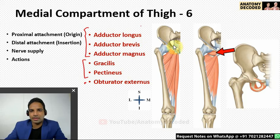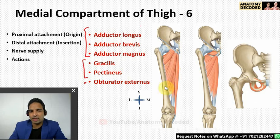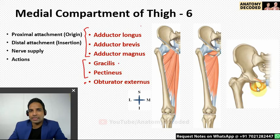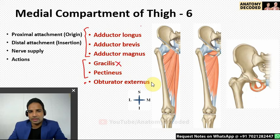The proximal attachment of the adductor muscles is on the pubis bone and the osteopubic rami. Adductor longus, brevis, and magnus attach on the anterior surface of the pubis and along the osteopubic rami. Their distal attachment is mostly along the linea aspera. Pectineus has its proximal attachment from the pectineal line, and obturator externus attaches along the outer aspect of the obturator membrane and adjacent margins of the obturator foramen.